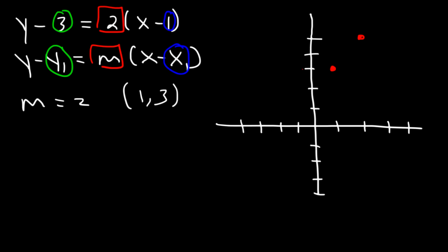So if you go 1 to the left, you need to go down 2 units. Now granted, this line is not going to be perfectly straight, but you get the picture. And then just connect them with a straight line.